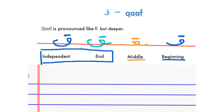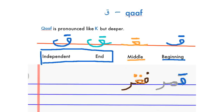An example for the beginning position is the word 'Qamar,' which means moon. In the middle, we have the word 'FAQR,' which means poverty. As you see, I wrote the letter Qaf here with two dots.